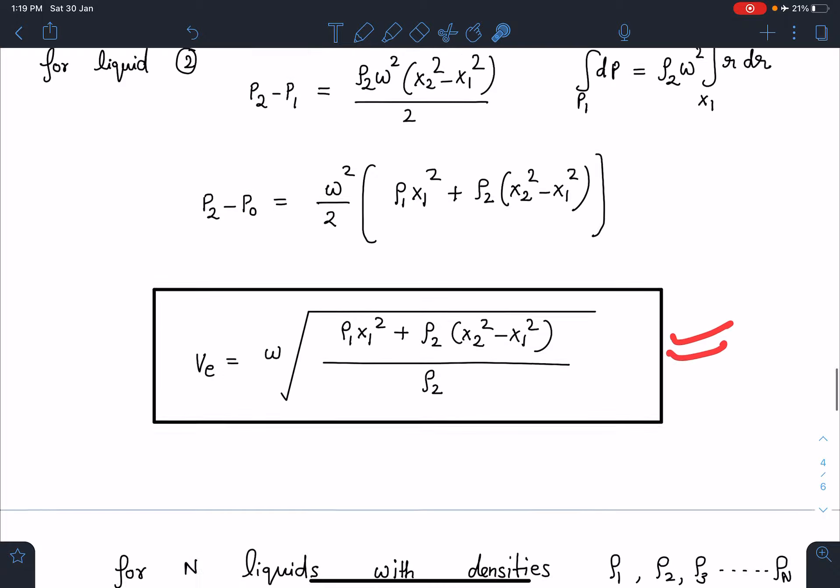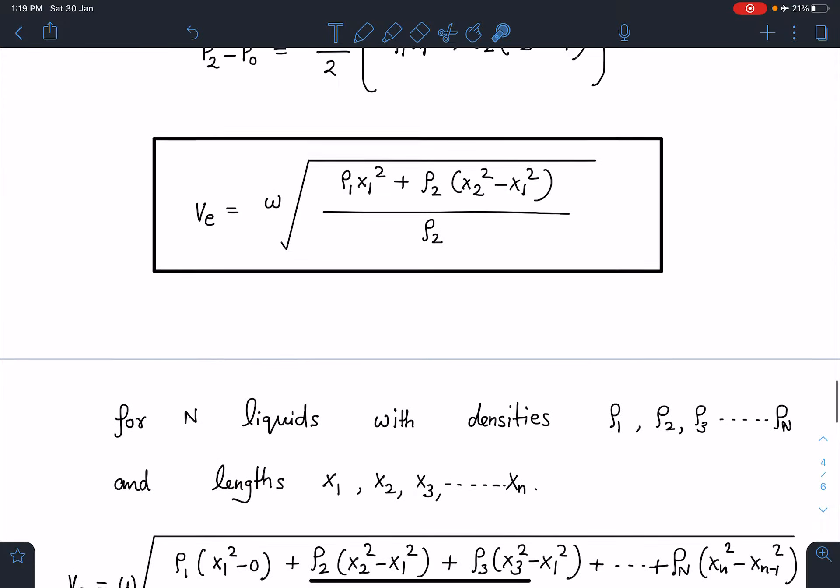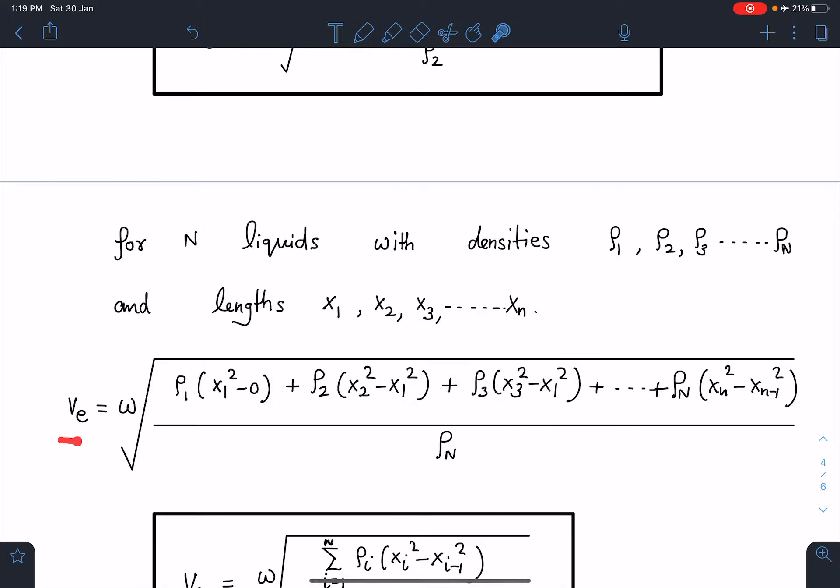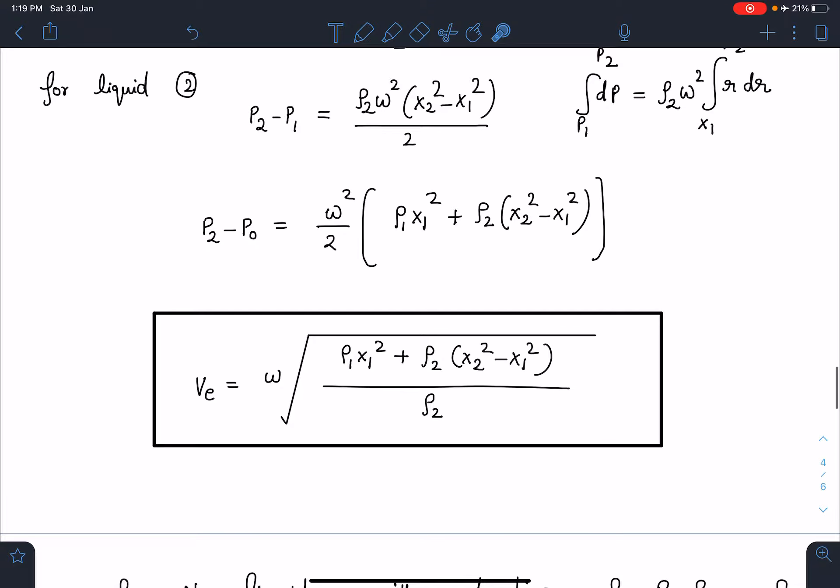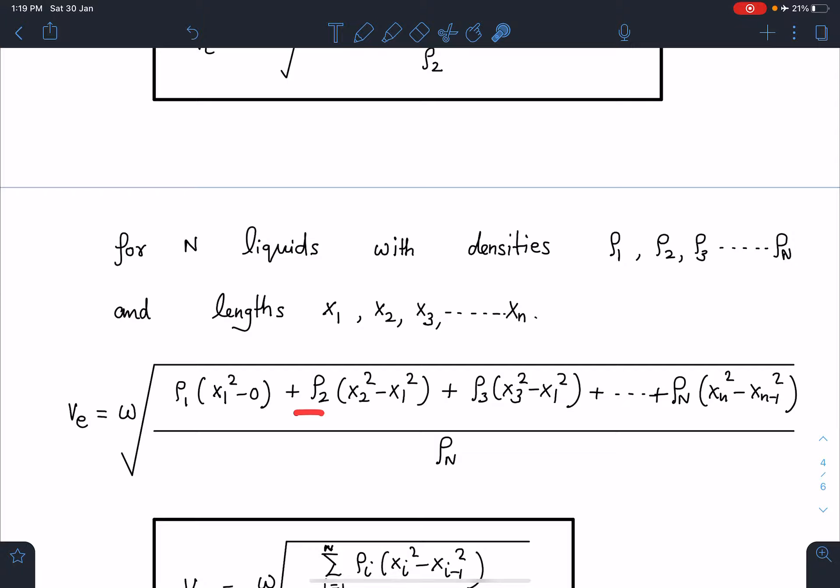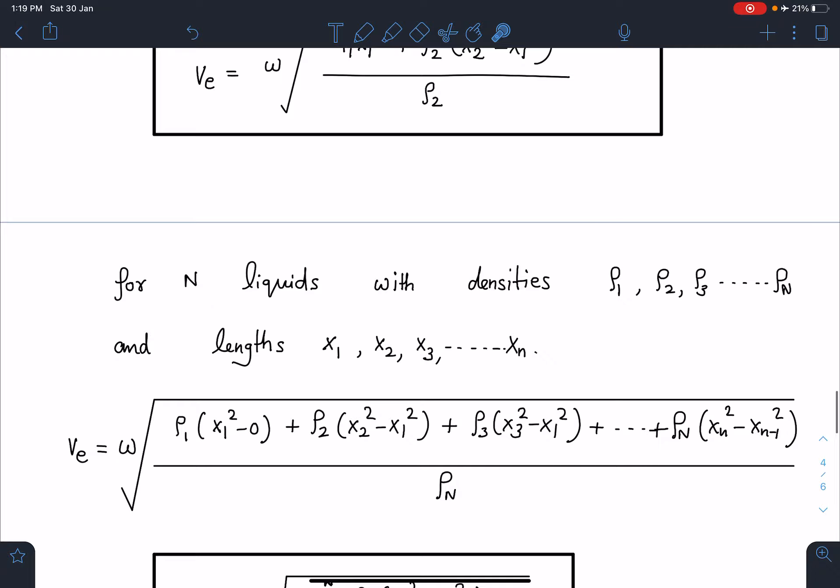You can see velocity of efflux will become omega times rho1 x1 square minus x2 square by x1 square minus 0 square. And the second one rho2 times x2 square minus x1 square. Third one x3 square minus x2 square and it will keep on going for n liquids. At nth liquid I can write rho n xn square minus x1 square divided by rho out, the liquid which is going to come out.